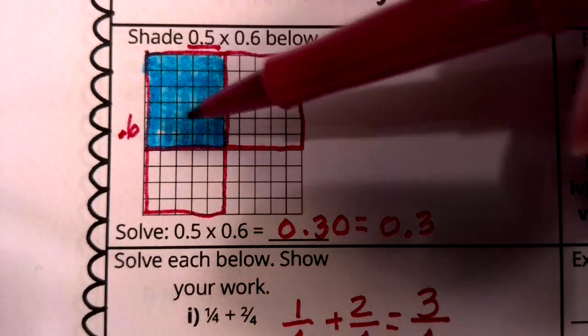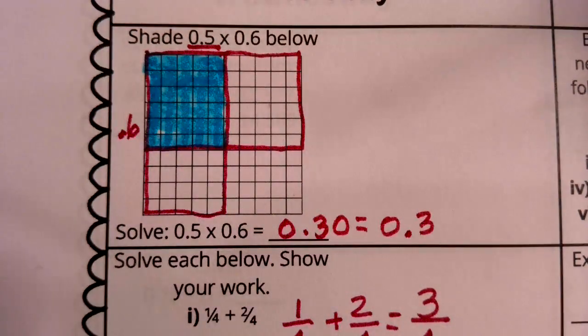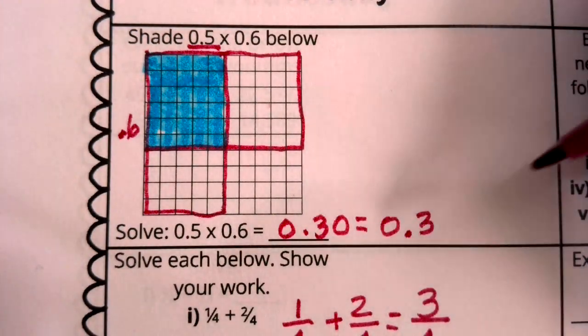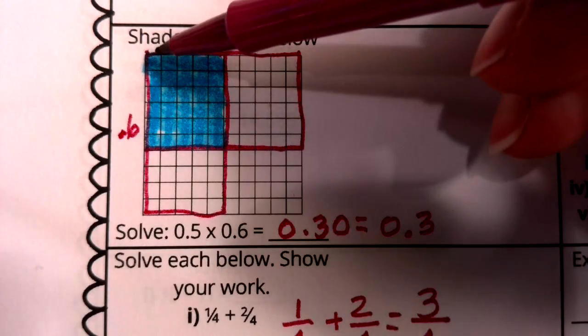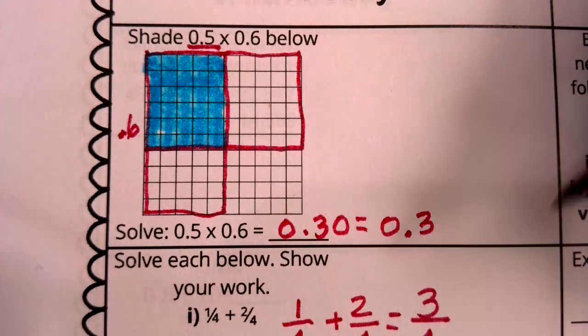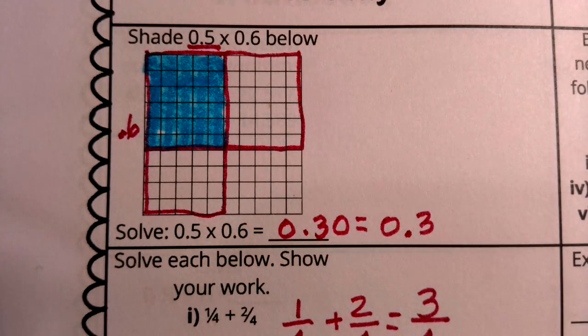Now once you add up those individual squares, you'll see that there are thirty hundredths in there. We have a five by six array. That's thirty hundredths, which of course means the same thing as three tenths. So that is my answer for number one.